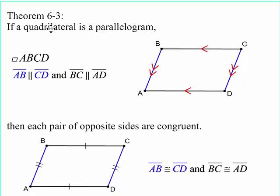Theorem 6-3: If a quadrilateral is a parallelogram, which I'm specifying here in these statements, and I showed the picture that it's a parallelogram, then each pair of opposite sides are congruent. So AB is congruent to CD, and BC is congruent to AD, which I wrote.